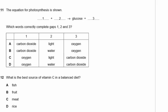Question 11: The equation for photosynthesis is shown. Photosynthesis is the opposite of aerobic respiration. In aerobic respiration you use oxygen and produce carbon dioxide, so in photosynthesis you use carbon dioxide and produce oxygen. The second reactant — is it light or water? Light gives energy for the reaction but is not a reactant itself. So it has to be water. The answer is B.